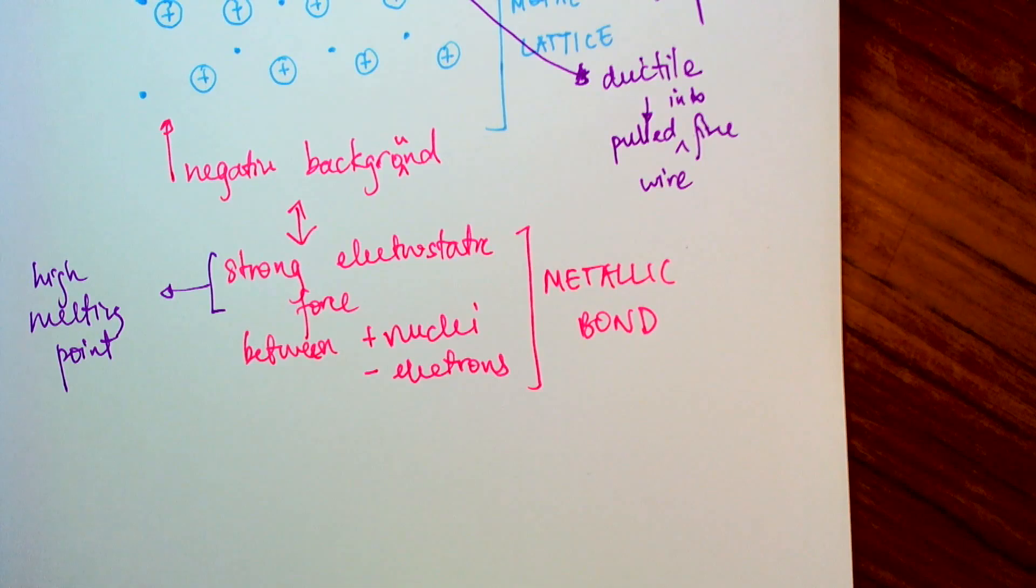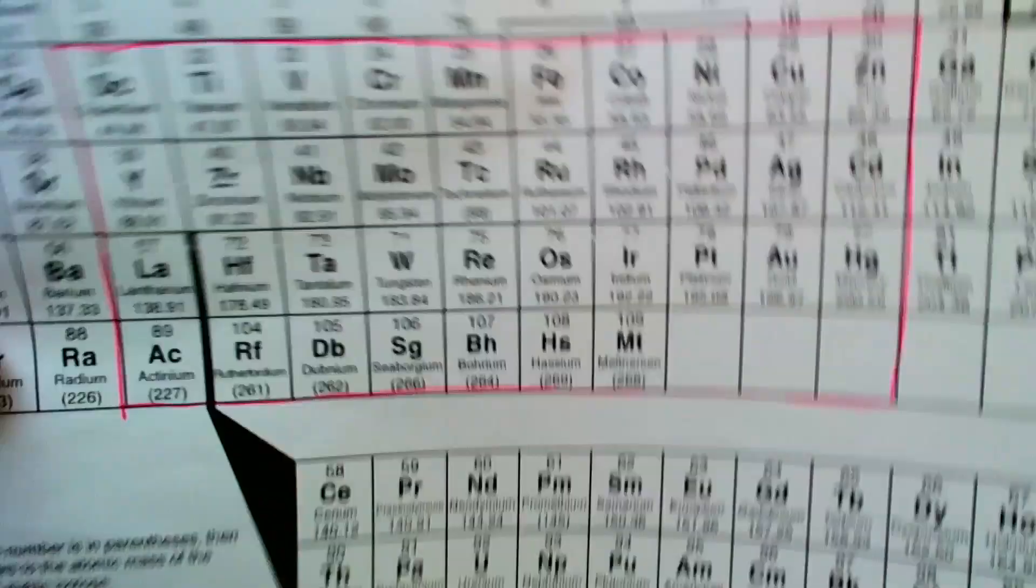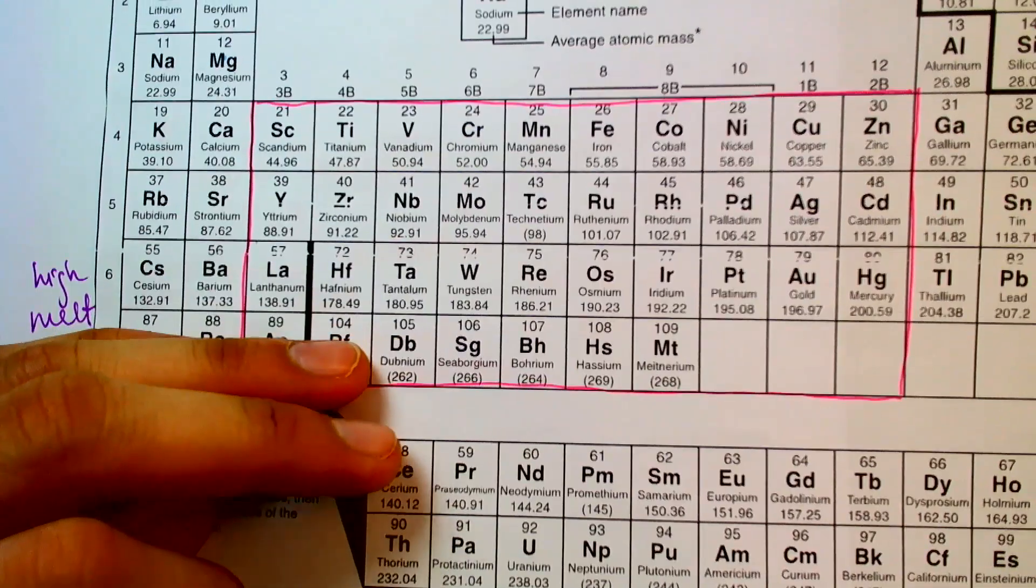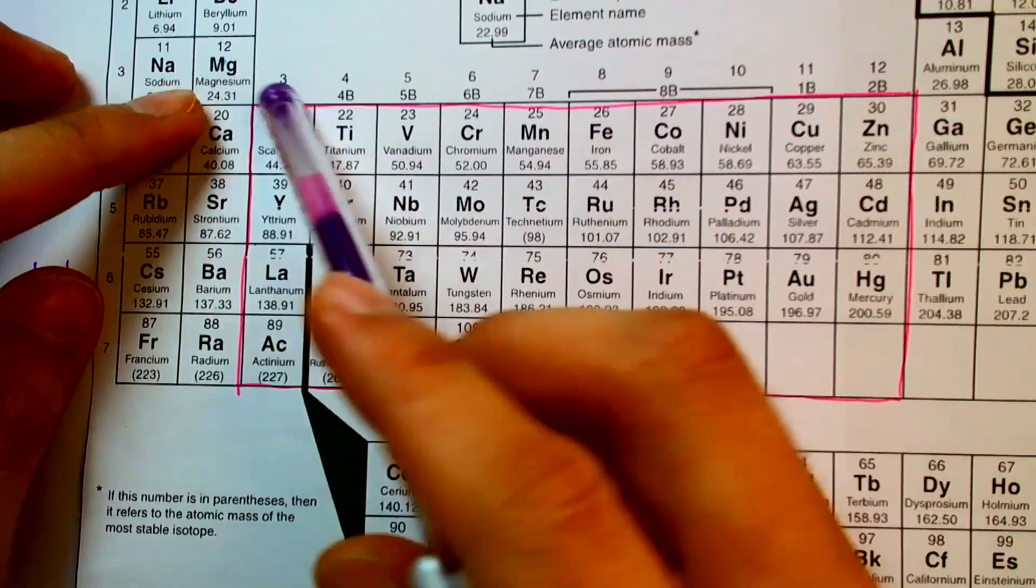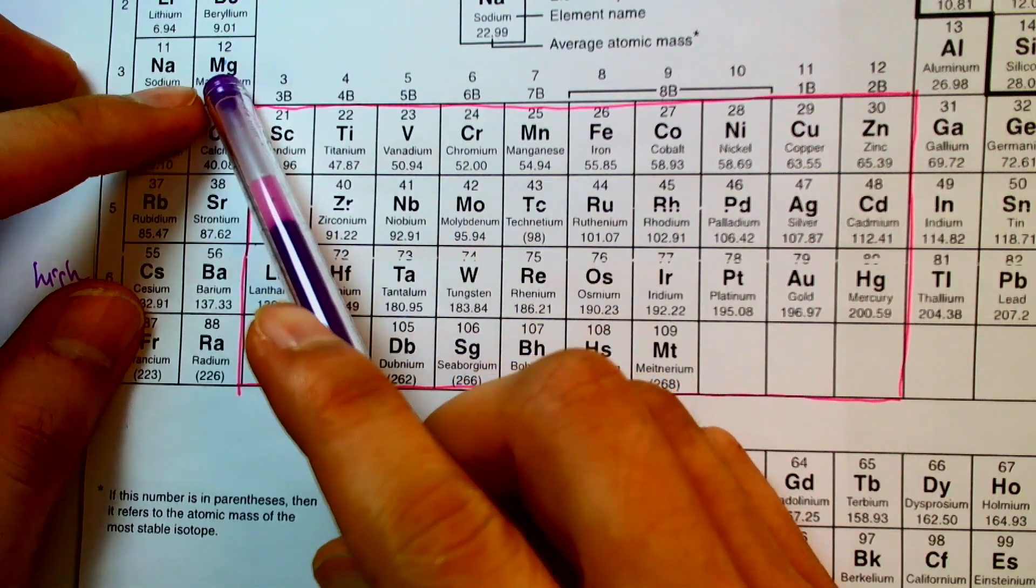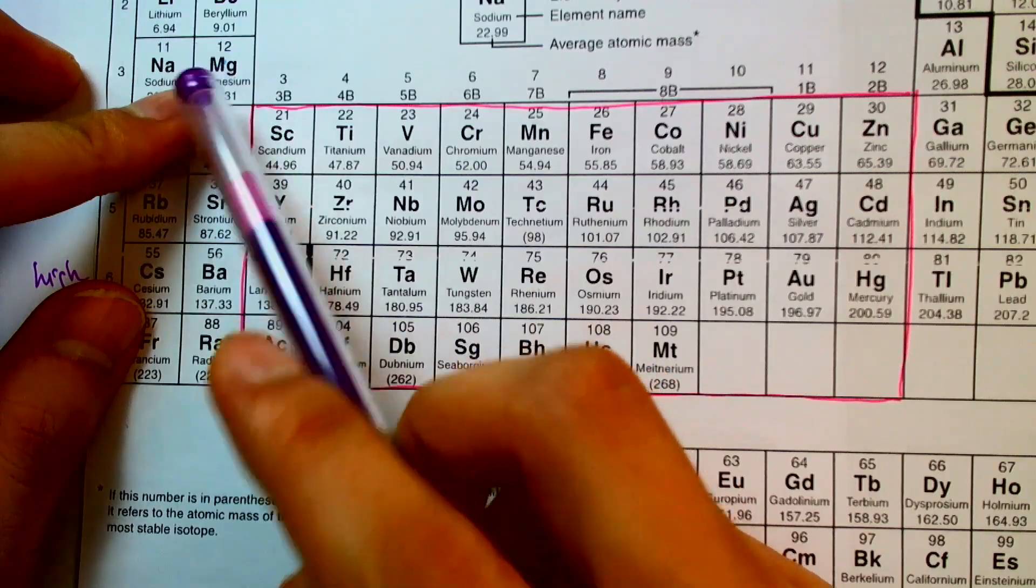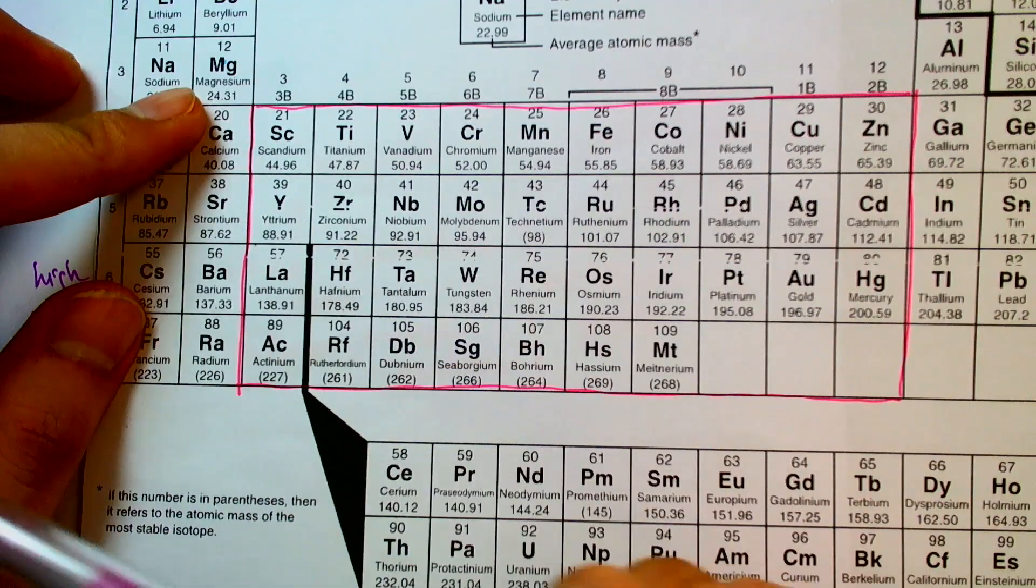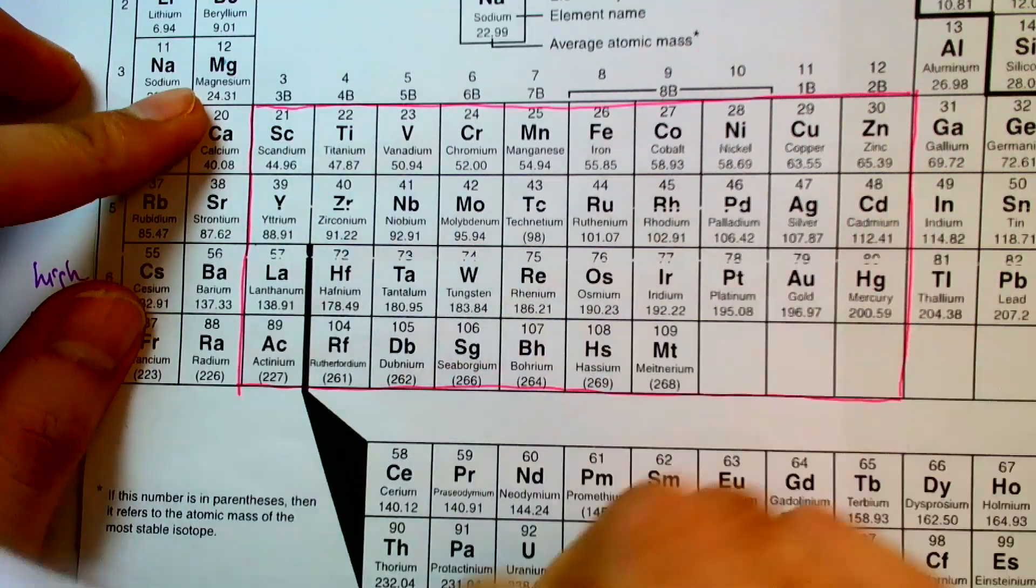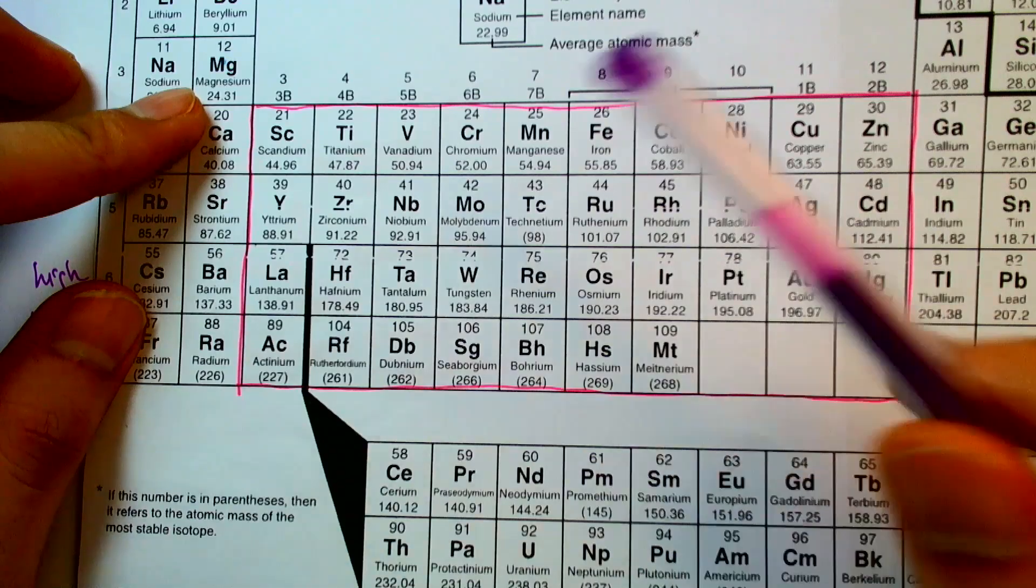So this is the type of bond that you would see within any sort of metal. So if you take, for example, a block of magnesium, all the magnesium atoms in magnesium are bonded together by this strong electrostatic force of positive nuclei in a sea of electrons.